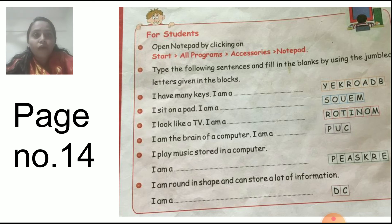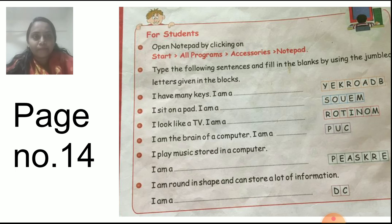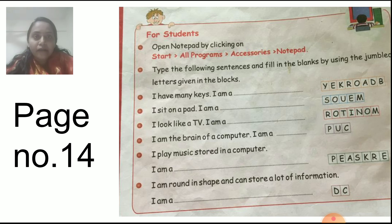Now: I have many keys. What am I? The answer is keyboard — K-E-Y-B-O-A-R-D. Write it down. Next: I sit on a pad. I am a mouse — M-O-U-S-E. I sit on a pad. I am a mouse. Write it down, children.